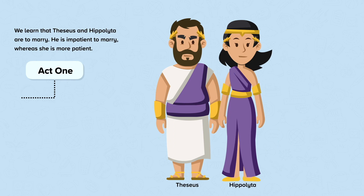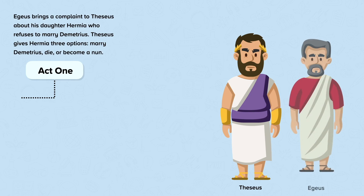In Act 1 we learn that Theseus and Hippolyta are to marry. He is impatient to marry whereas she is more patient. Aegeus brings a complaint to Theseus about his daughter Hermia, who refuses to marry Demetrius.